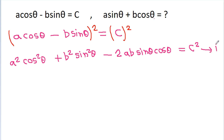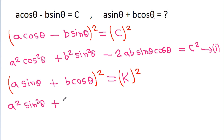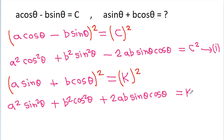Suppose this is equation 1, and we have to find the value of a sin theta plus b cos theta. Suppose it is equal to k, and if we square both sides, then we get a squared sin squared theta plus b squared cos squared theta plus 2ab sin theta cos theta is equal to k squared. Suppose this is equation 2.